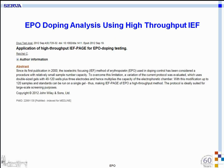There was a publication in 2012 by the group of Christian Reichel from the WADA laboratory in Austria, showing that variation differentiation was easily possible using a dedicated modified isoelectric focusing method combined with electro blotting and immunodetection.